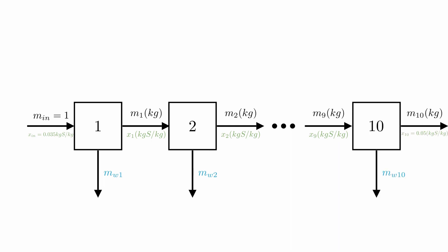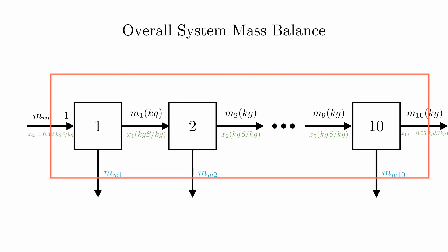In total, we'll have ten evaporators so we can write the overall mass balance equation for the system. I'll say it again. When in doubt, N equals out. So all we have to do is add up what's coming in and out of the overall system.